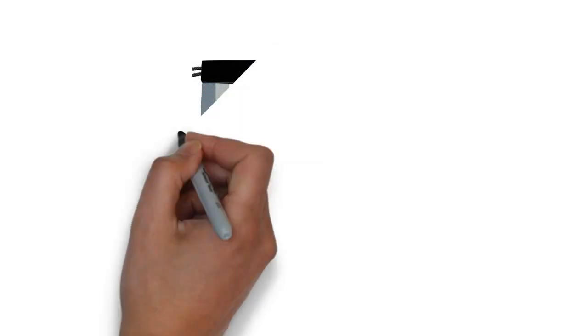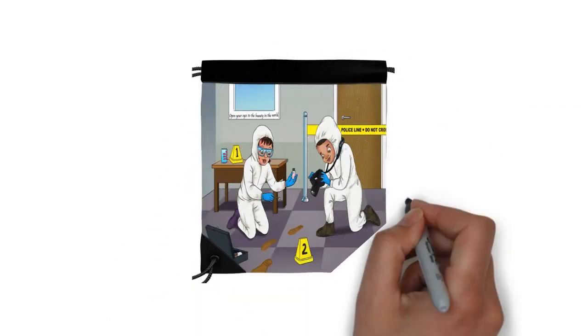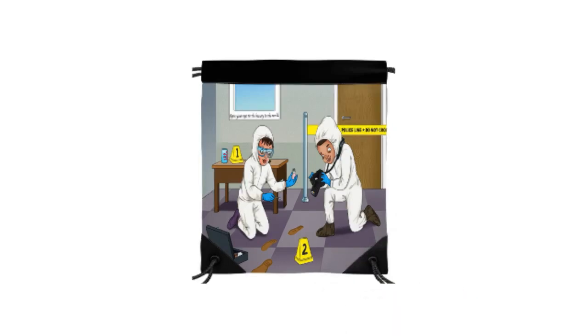It is up to the law enforcement agencies to seek help from forensic labs to ascertain the authenticity of evidence or witness to relate a criminal or victim to the crime scene.